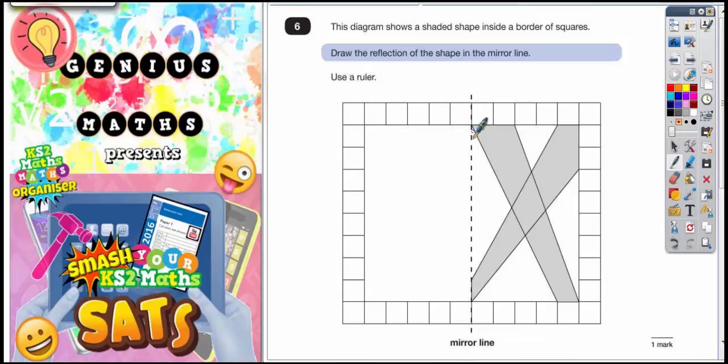Now the easiest way I can think of to describe this one to you is basically to do these two lines first. These two lines which are slanting this way first. So this point when we reflect it, because it's touching the mirror line, is still going to be on the mirror line.